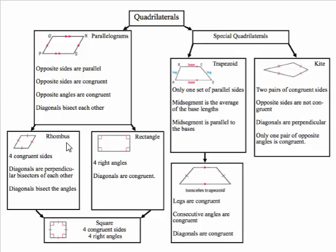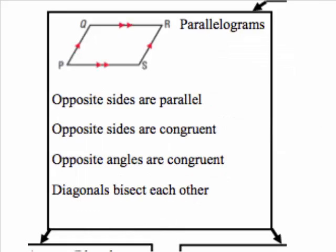Let's take a look at parallelograms and some of their properties. For parallelograms, the opposite sides are always parallel. The opposite sides are always congruent. Opposite angles are congruent — for example, angle P would be congruent to angle R, and angle Q would be congruent to angle S.